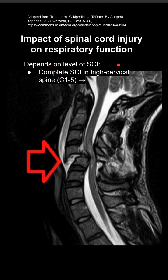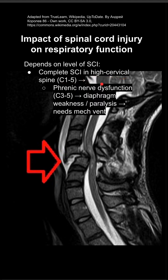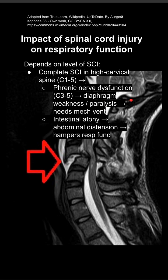If the patient has a spinal cord injury in a high cervical region, C1 through 5, they can have phrenic nerve dysfunction. Remember that the diaphragm is innervated by the phrenic nerve from C3 through 5, which keeps the diaphragm alive. If this is damaged, they can have diaphragmatic weakness and paralysis, and they'll need mechanical ventilation.